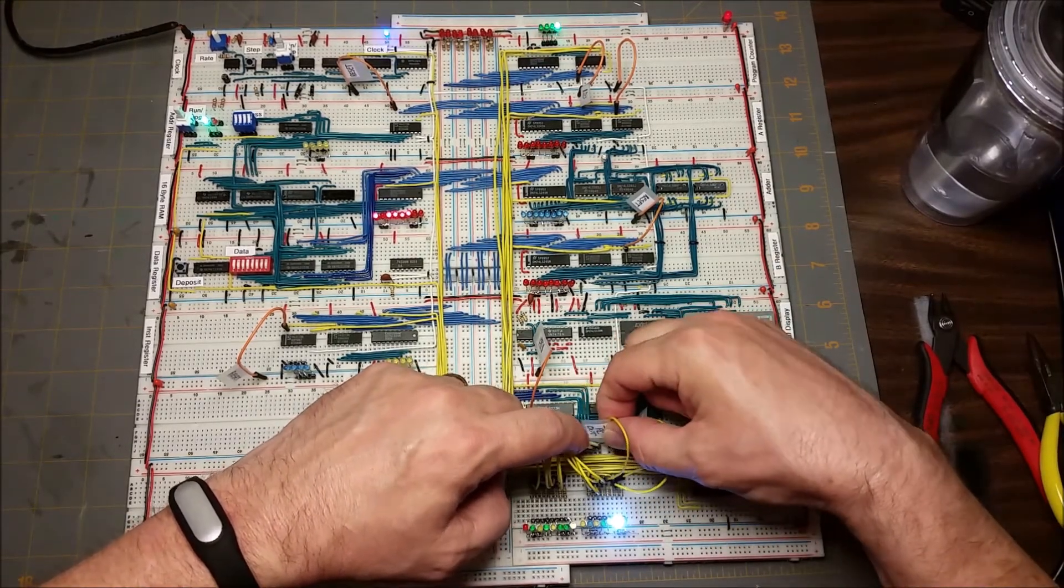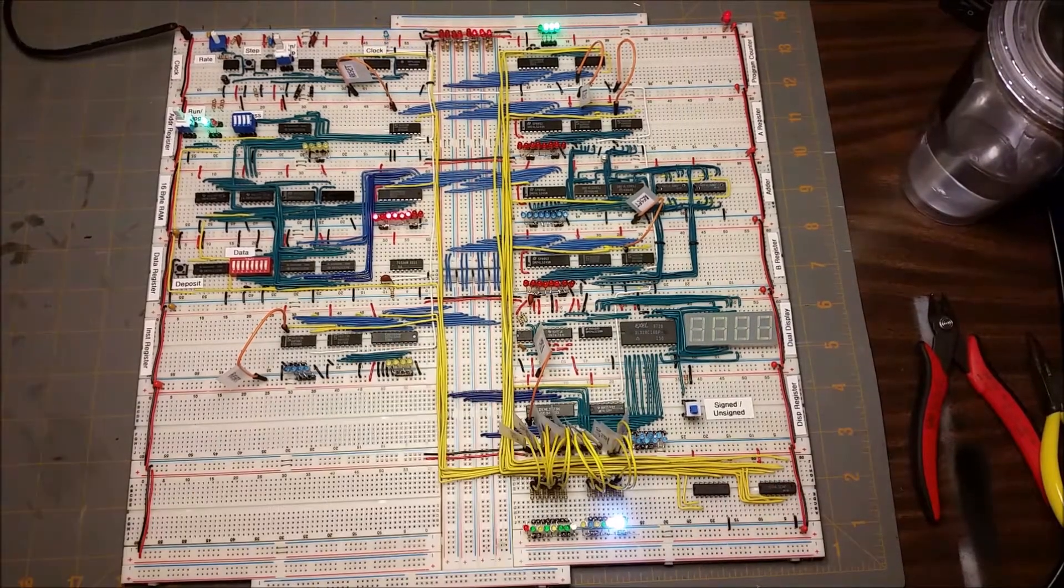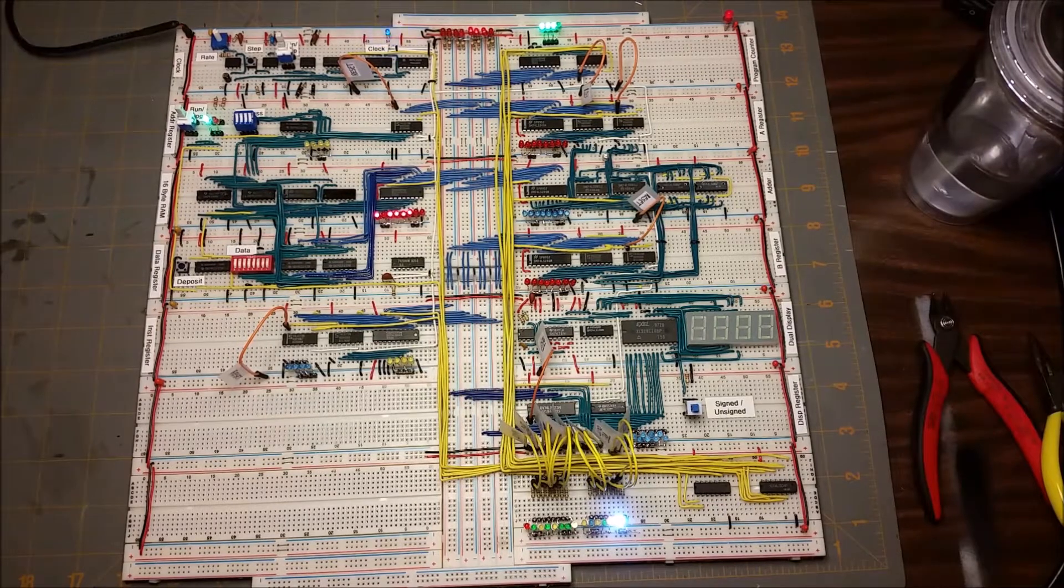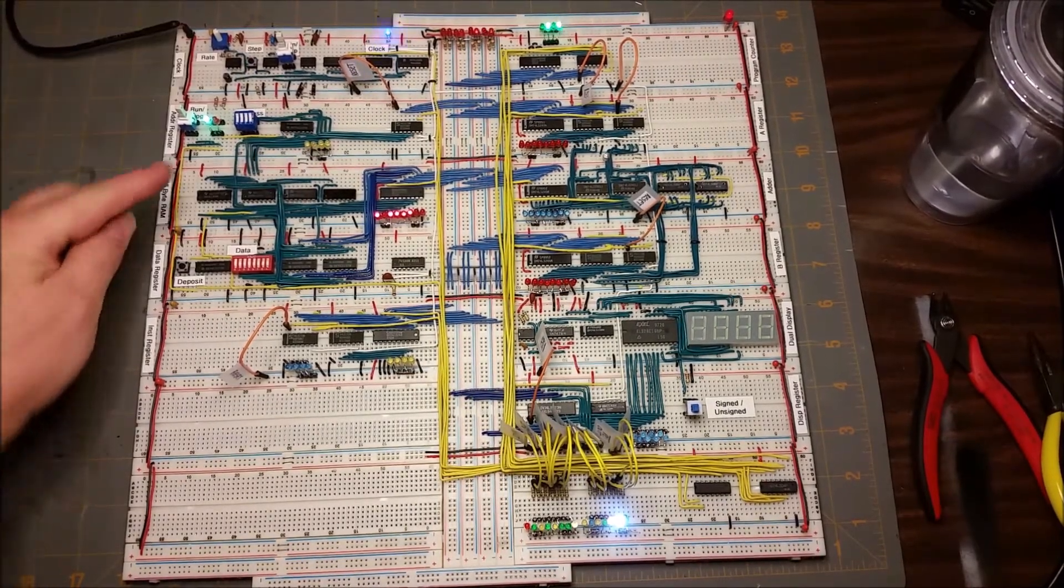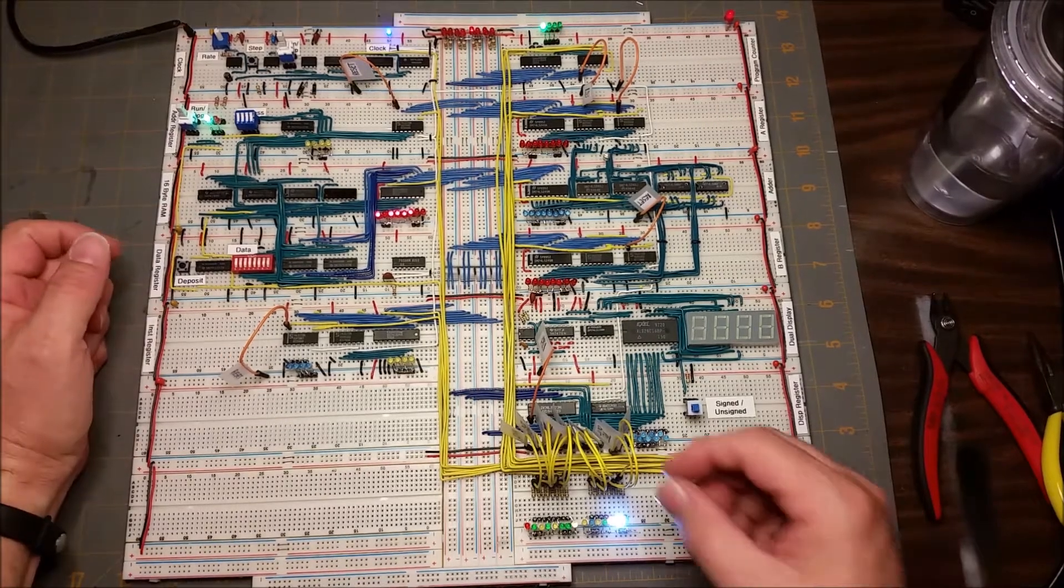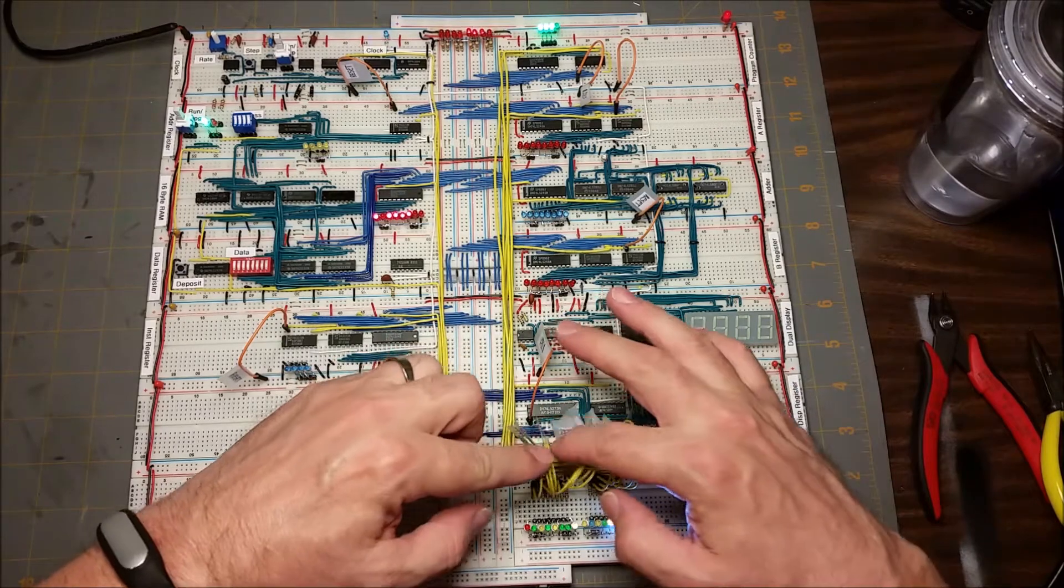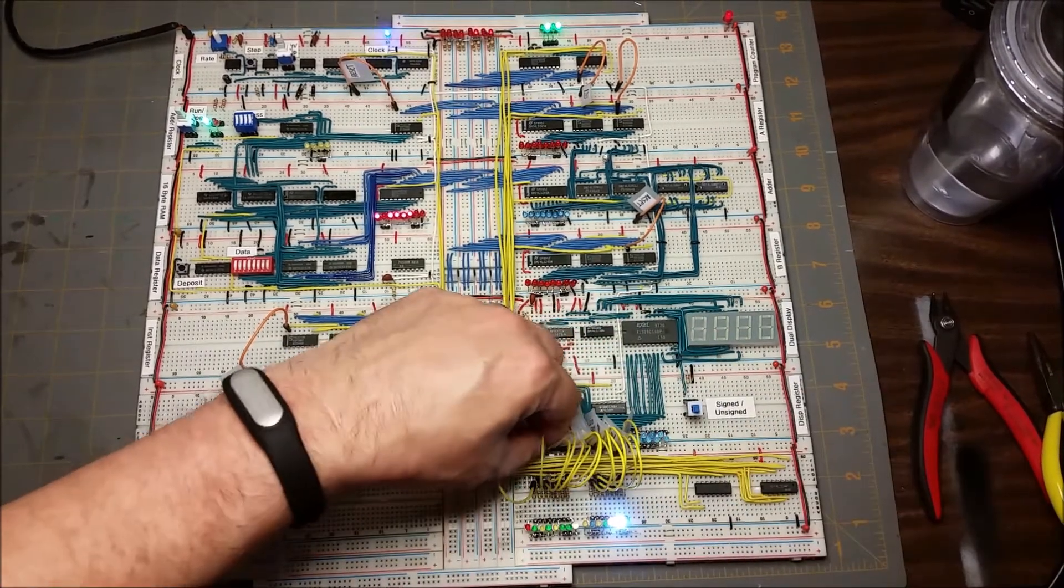I also want to output the program counter to the data bus. There it is. So now we have the program counter going out on the data bus. Let's latch that into the address register.